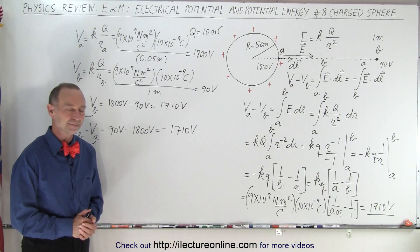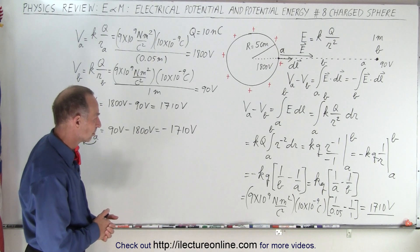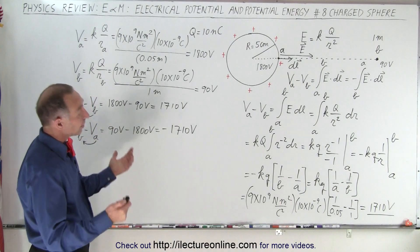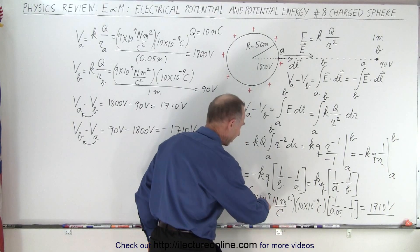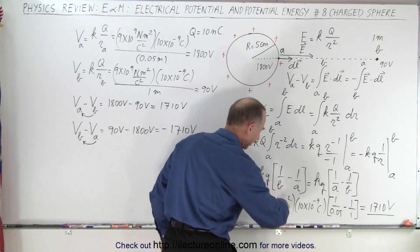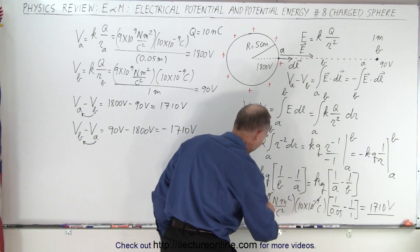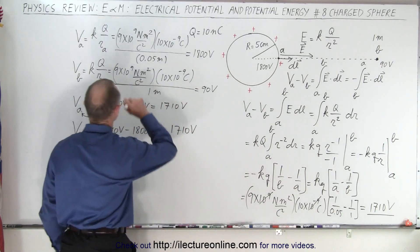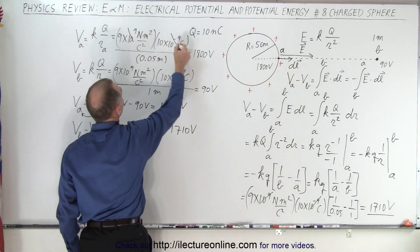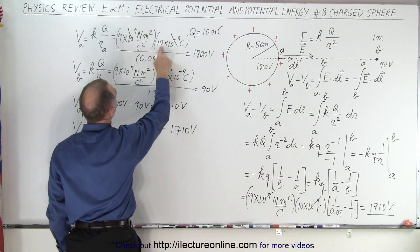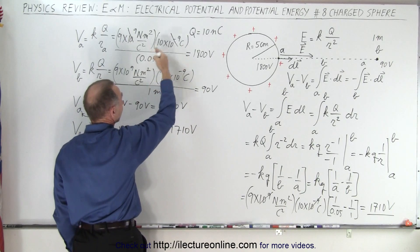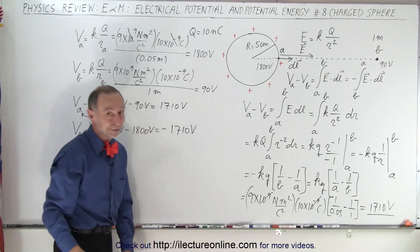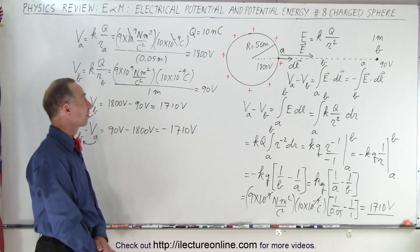We could simplify that a little bit more. 10 to the 9th, we cancel out with 10 to the minus 9th. So the expression becomes 9 times 10, which is 90, divided by 0.05 is like multiplying times 20, 90 times 20 is 1800 volts. We didn't even need a calculator.